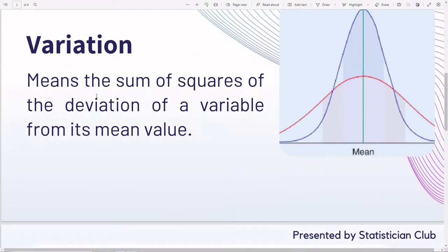Variation means the sum of squares of the deviation of a variable from its mean value. Suppose you have a variable y and its mean value is y bar. Then y minus y bar squared, and after summing this, this is the variation.